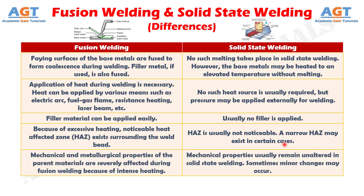Number five: in fusion welding, mechanical and metallurgical properties of the parent materials are severely affected during fusion welding because of intense heating, whereas mechanical properties usually remain unaltered in solid-state welding. Sometimes minor changes may occur.